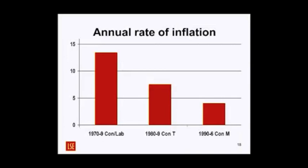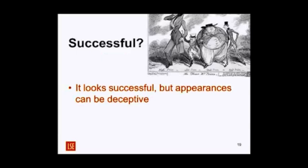Annual inflation rates: in the 1970s under Heath, Wilson, and Callaghan there were big spikes into the 20s. Under Thatcher and then Major, average rates come down and it looks pretty good. But appearances are deceptive — Britain's performance in the 1980s was rather erratic with considerable spikes again. It's not until really the Major government that things start getting a little more predictable and stable.